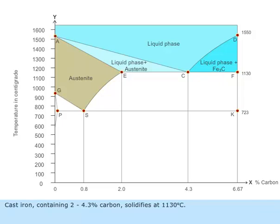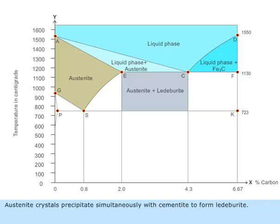Cast iron containing 2 to 4.3 percentage carbon solidifies at 1130 degrees centigrade. Austenite crystals precipitate simultaneously with cementite to form ledeburite. These cast irons will consist of primary austenite and ledeburite crystals.